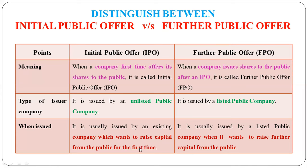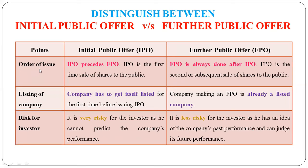So the first time when a company raises public capital, it is called Initial Public Offer. Next, Order of Issue: IPO precedes the FPO. This means that the IPO happens first — it is the first time the company goes public. The FPO comes after the IPO. The second, third, fourth, or fifth time the company issues shares, it is an FPO. So IPO comes first, and FPO is subsequent.